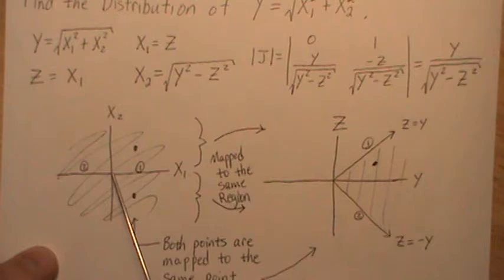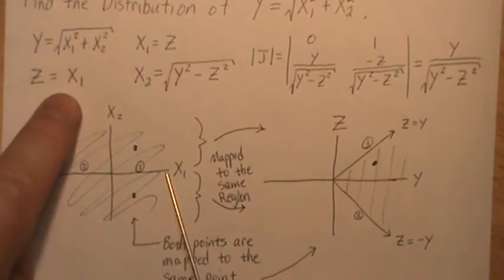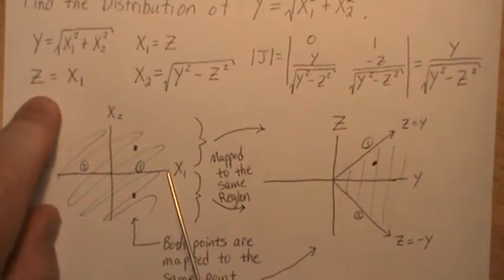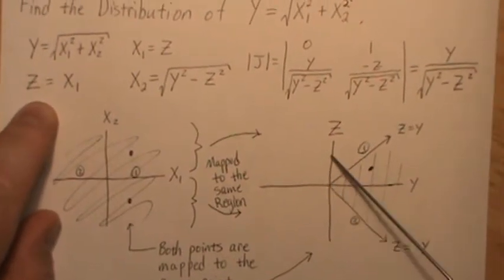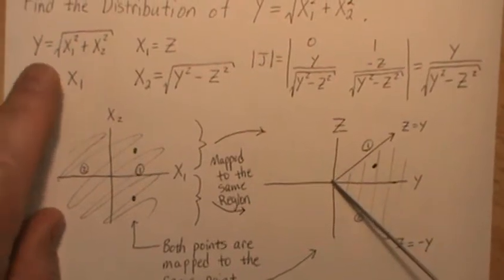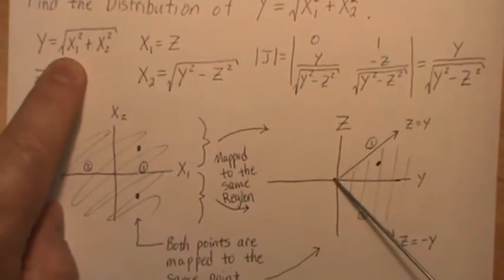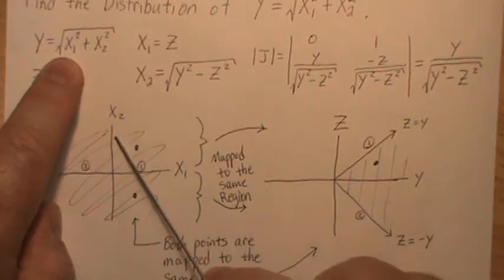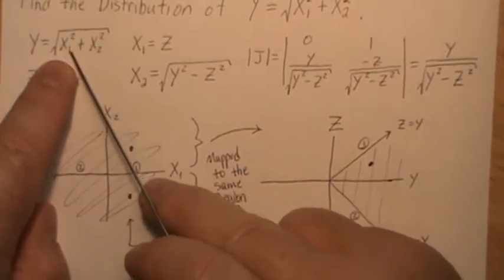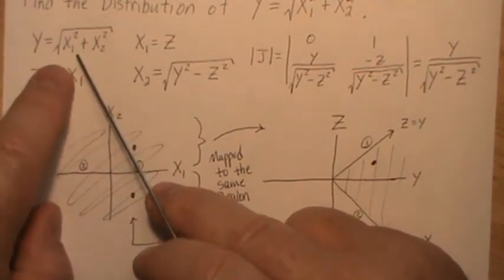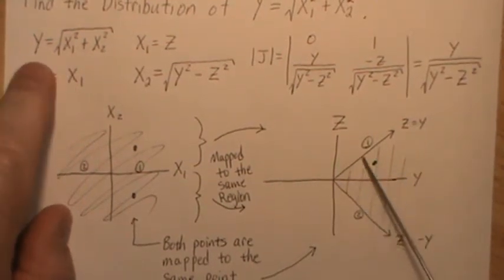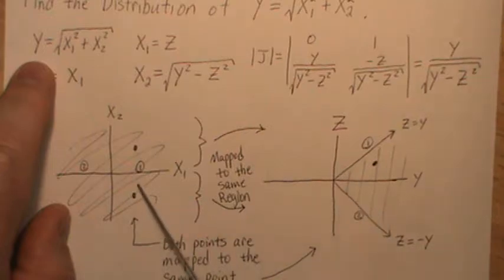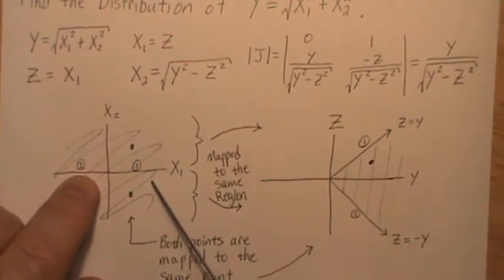So up here, z goes from positive to infinity, from zero to infinity, positive infinity. But then this one, if x2 is zero, and then we take the square root of x1 squared, so it's just y equals x1. So z is equal to y on this point here.